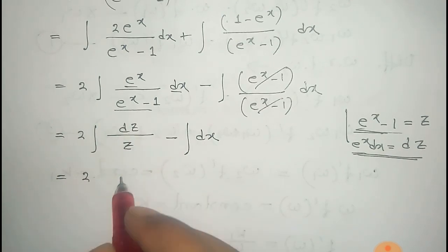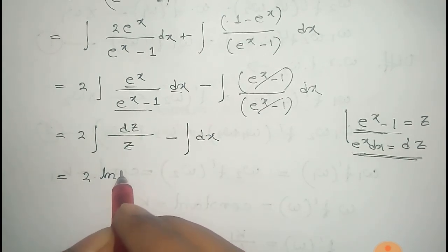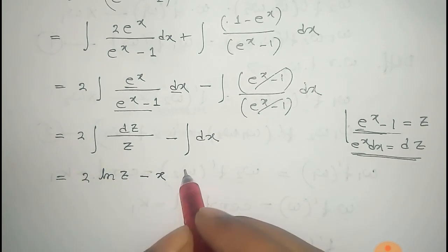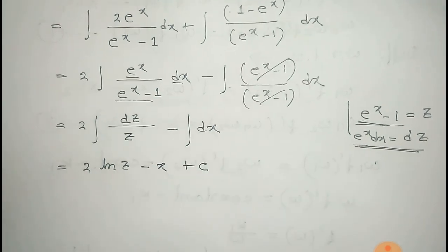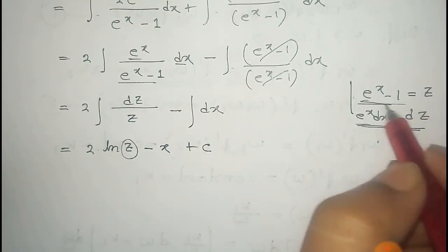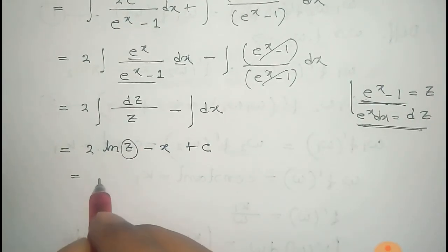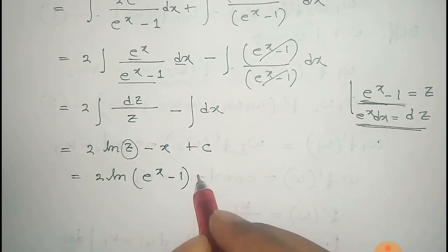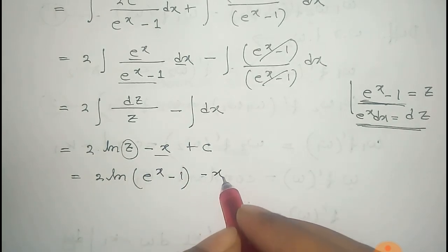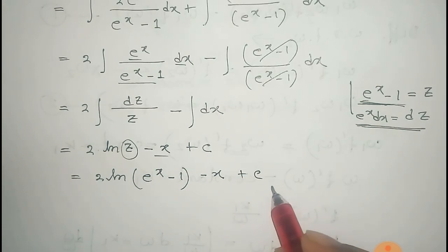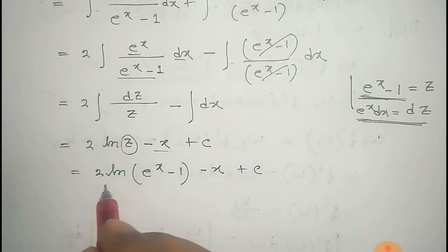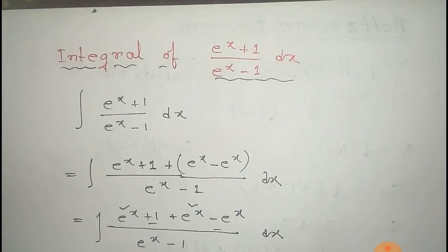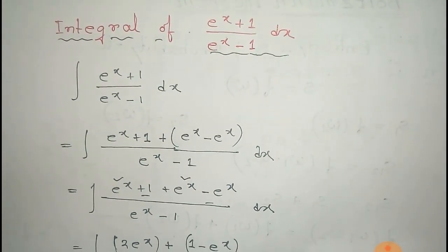The integral of dz by z is logarithm of z, and the integral of dx is x, plus a constant c. Substituting back the value of z as e to the power x minus 1, we get log of e to the power x minus 1 minus x plus c. Thus we get the integral of e to the power x plus 1 by e to the power x minus 1 dx.